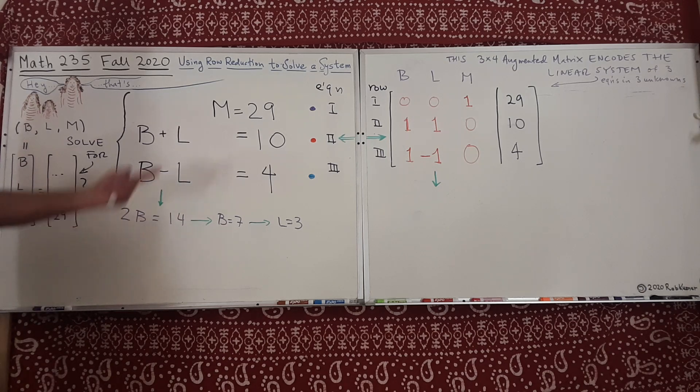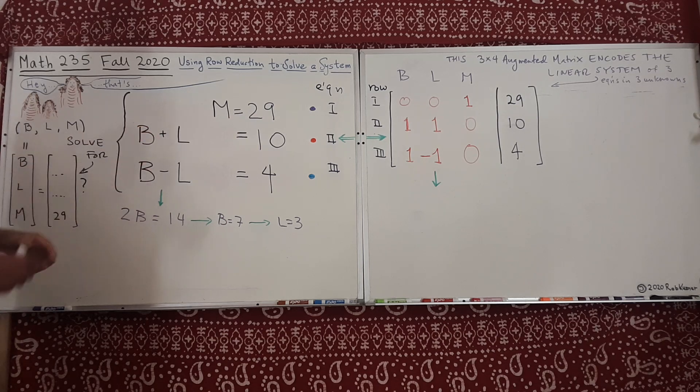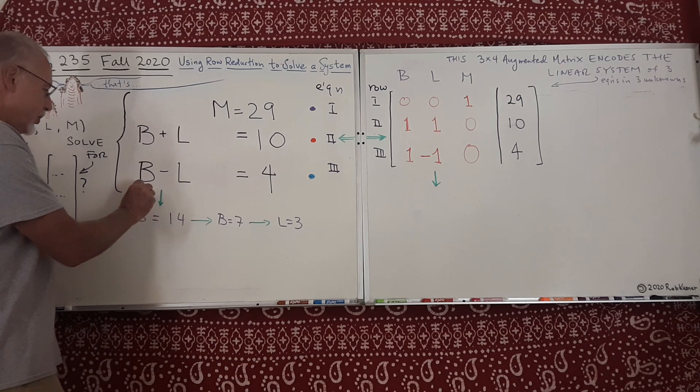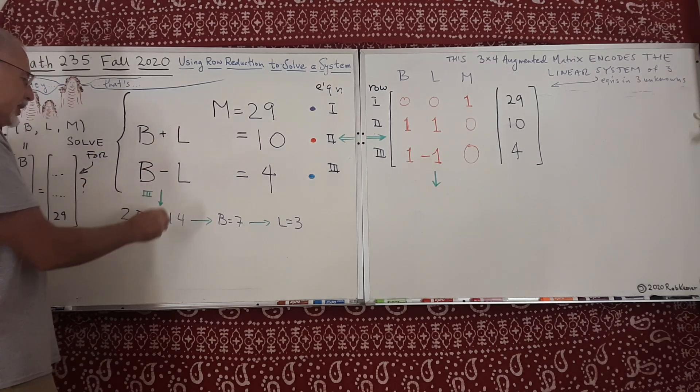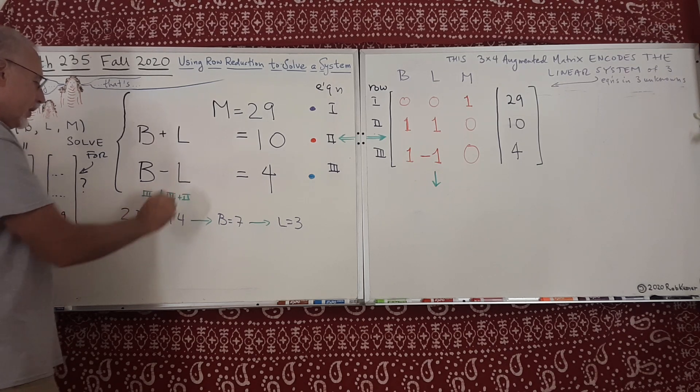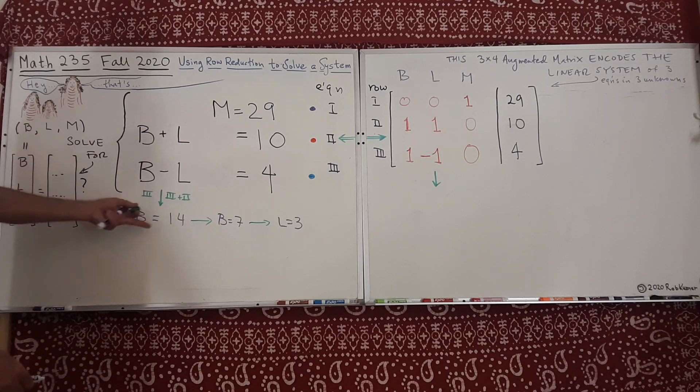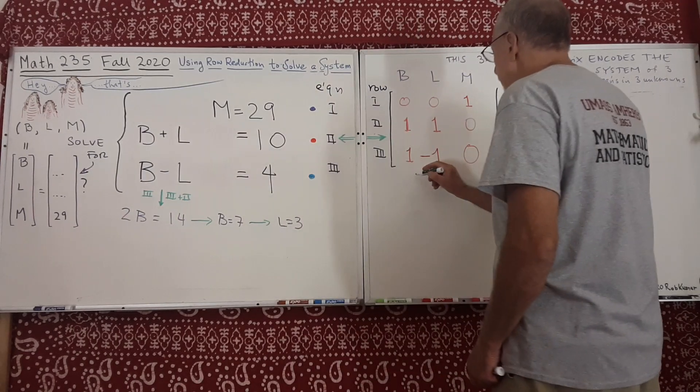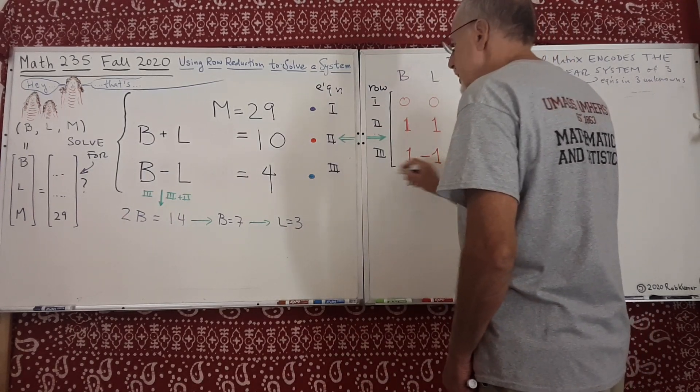But let's try to do the same process and see actually what we did here. This step was what? We were taking the second equation and we added it to the third equation. So I might write here something like, I take equation 3 and I add equation 2 to it. So 2 became 3 plus 2, and that's the equation 2B equals 14. So what happens here? Let's take row 3 here, which corresponds to equation 3, and replace it with row 3 plus row 2.